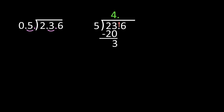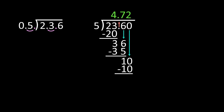Your next step is to bring the 6 down. So I have 36 divided by 5, and 36 divided by 5 is 7. 7 times 5 is 35, and 36 minus 35 is 1. I do need to add a 0 behind the 6, so I have the 0 to bring down. So I can do 10 divided by 5, and 10 divided by 5 is 2. 2 times 5 is 10, and 10 minus 10 is 0. So my quotient is 4 and 72 hundredths.